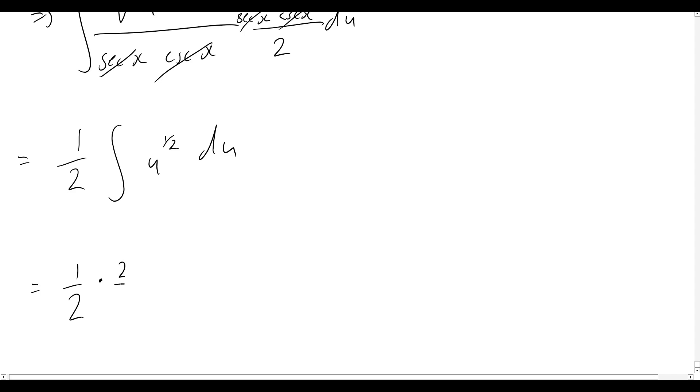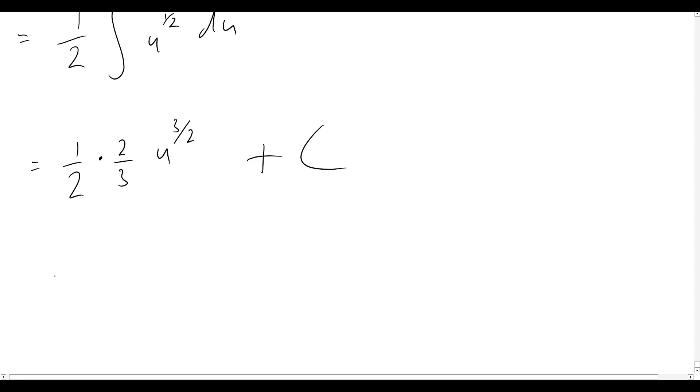So that means we'd then end up multiplying that one half by 2 over 3, and then u to the power of 3 over 2, and then just plus c, some constant term there. Okay, so that means now for our final answer what we'll be left with is simply 1 over 3.